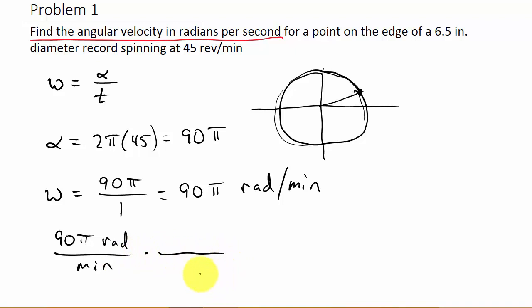So that's 90 pi radians per minute. And I need to convert that to radians per second. So, well, what do I need? I need seconds down here, because I need radians per second. Well, we know that what? One minute, because I've got to cancel out the minutes, is the same as 60 seconds.